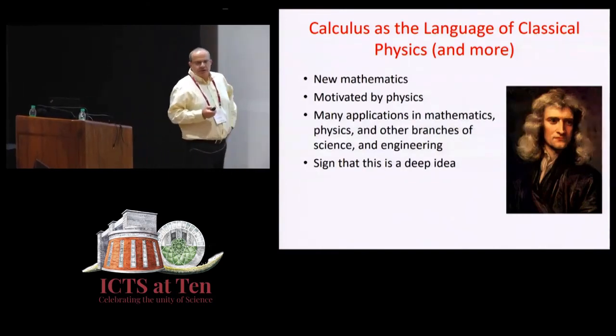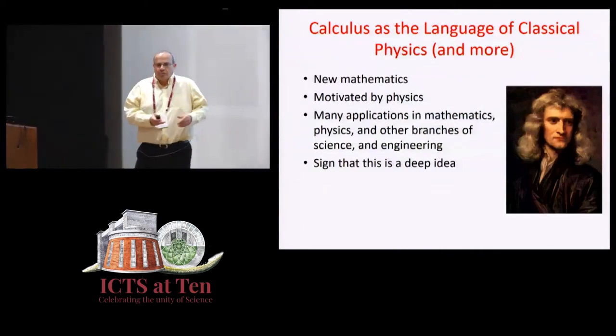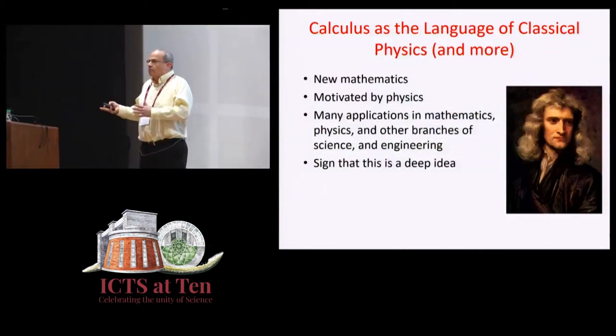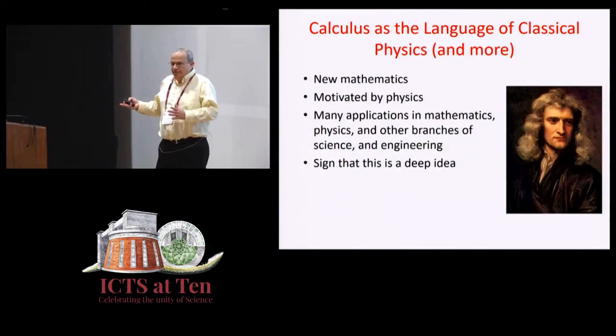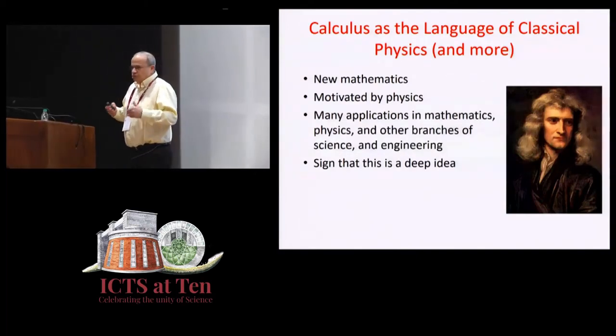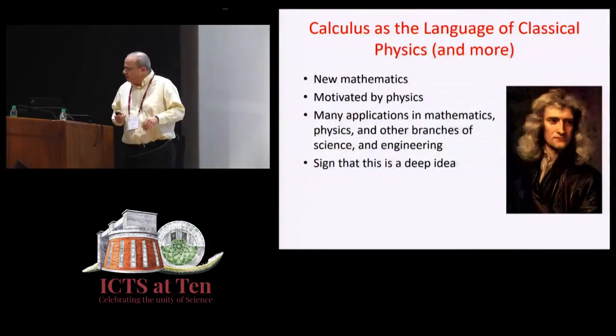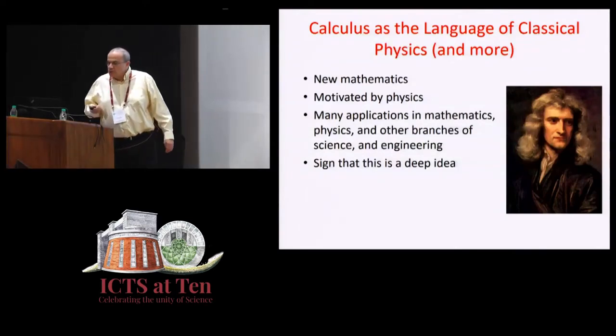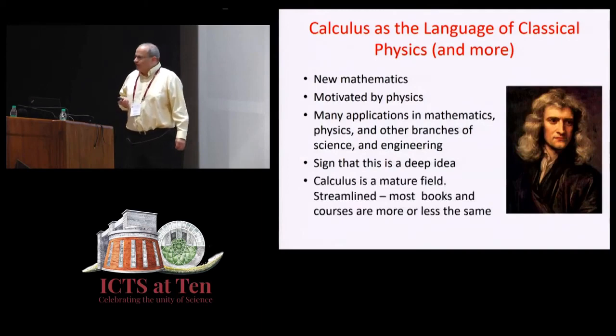This is the hallmark of a deep idea. A deep idea is something that appears to solve one problem, but turns out to solve many other problems it was not intended to solve. So, the criterion for a deep idea: it does better than it was supposed to do. It was designed to do one thing and does many other things.